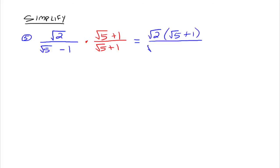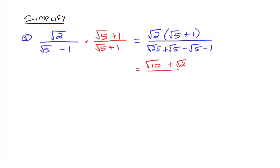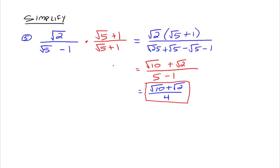In the numerator, we have the square root of 2 times the square root of 5 plus 1. In the denominator, we multiply the conjugates together: the square root of 5 times the square root of 5 is the square root of 25. The plus square root of 5 and minus square root of 5 cancel, and then minus 1 remains. Distributing the square root of 2 through the numerator gives square root of 10 plus square root of 2, and the denominator becomes 5 minus 1, which is 4. So the answer is the square root of 10 plus the square root of 2, all over 4.